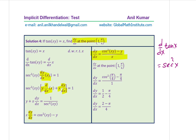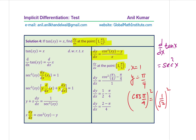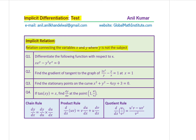Since we need dy/dx at the point (1, π/4), we substitute x equals 1 and y equals π/4. We know cos(π/4) equals 1/√2, so cos²(π/4) equals 1/2. Therefore we get 1/2 for cos²(π/4), and substituting gives the simplified final expression for dy/dx at the given point.